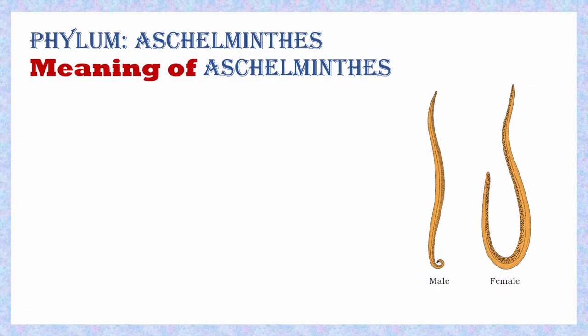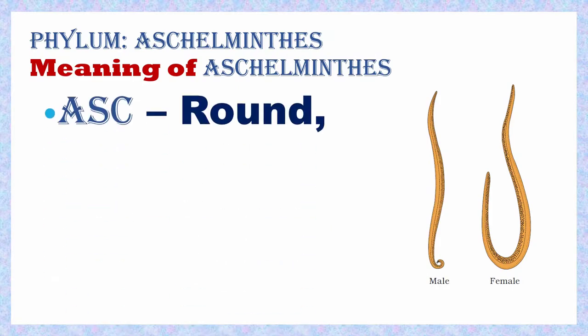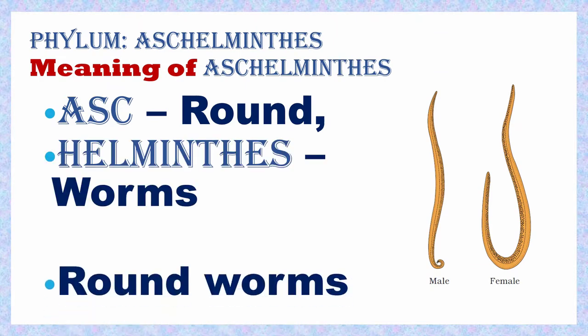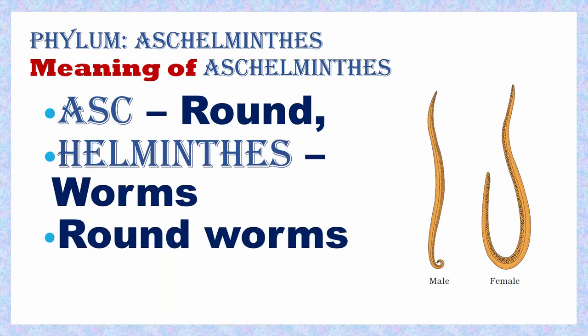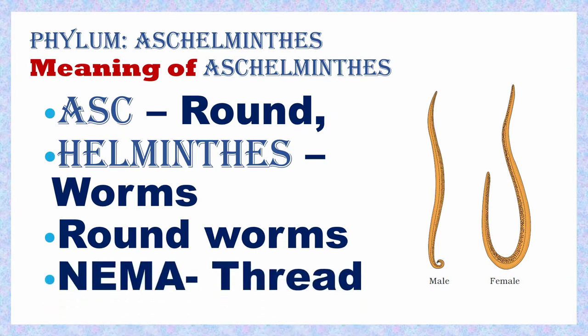Now let me discuss the general characters of Phylum Aschelminthes — the roundworm. The term Aschelminthes comes from a Greek word: 'ascal' means round cavity and 'helminthes' means worms, indicating roundworms. When you make a cross-section of Aschelminthes, you get a round circular shape — hence called roundworms. Another term is Nemathelminthes, where 'nema' means thread.